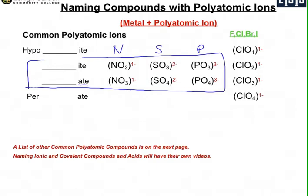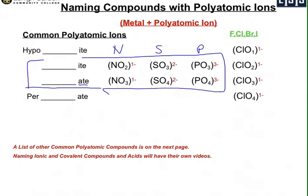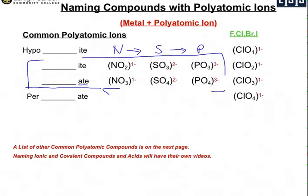Similarly, if you go down to the ATE row, it'd be nitrate, sulfate, and phosphate. With these six polyatomic ions, there's a little bit of an order to remember. I like to start with the ATE group: nitrate, sulfate, and phosphate. The order is nitrogen, then sulfur, then phosphorus — N, S, and P. The charges are minus one, minus two, and minus three, so they increase by one going across.